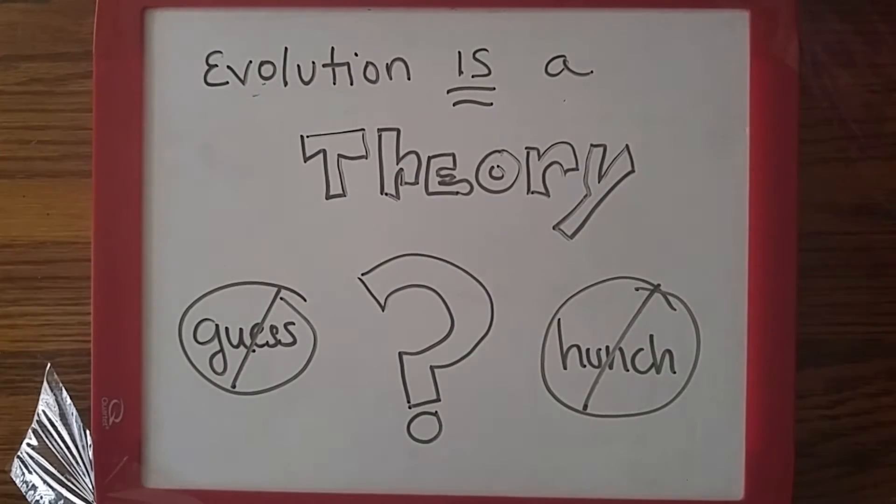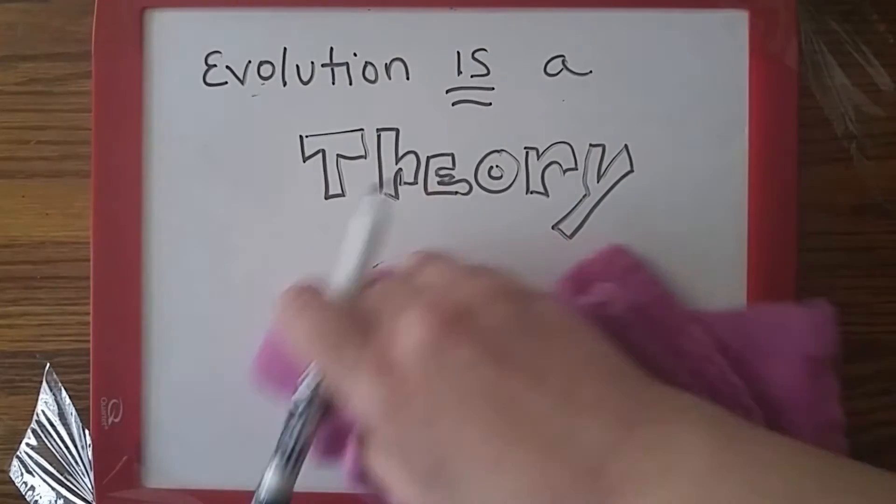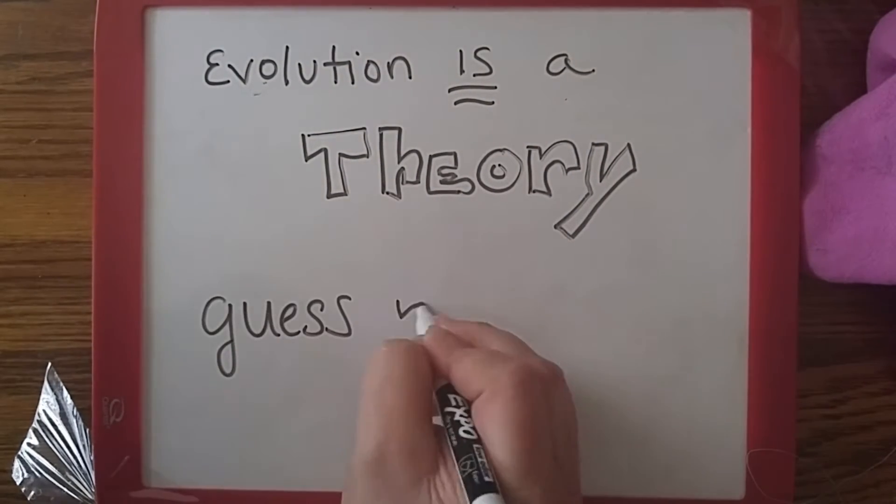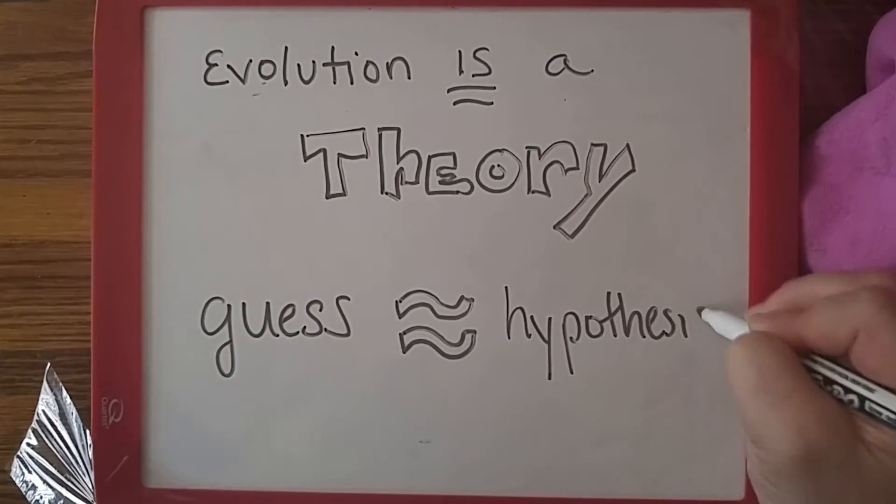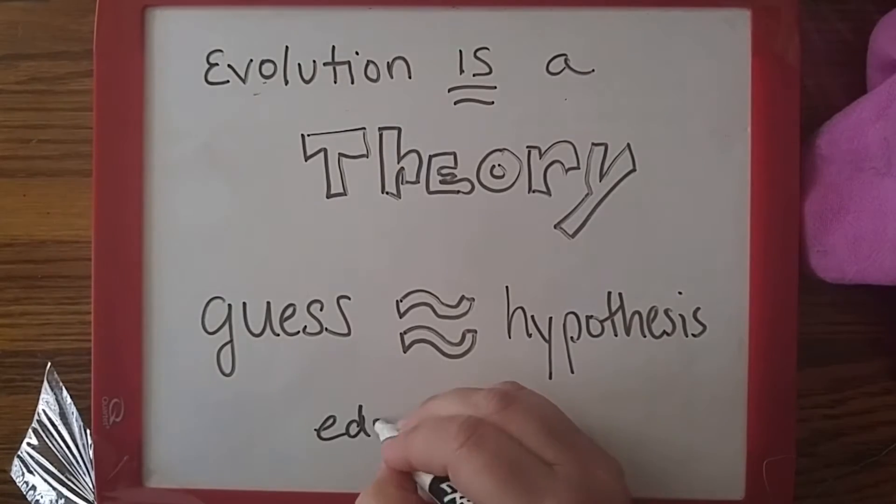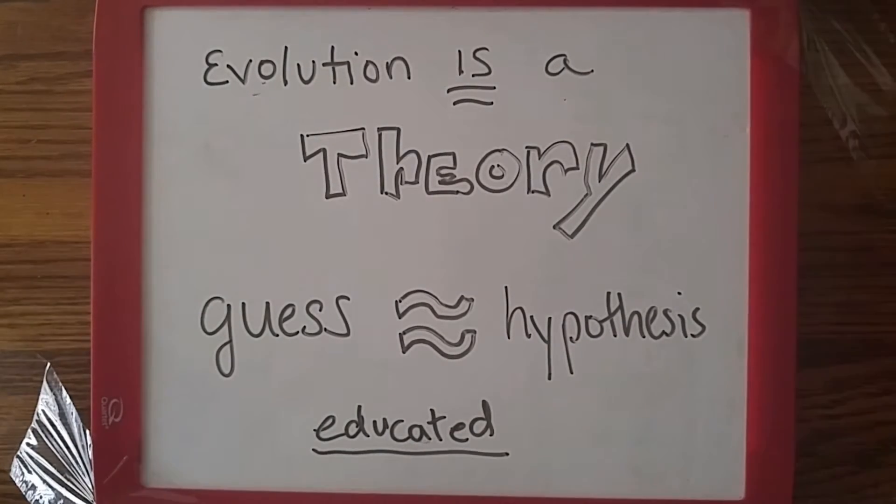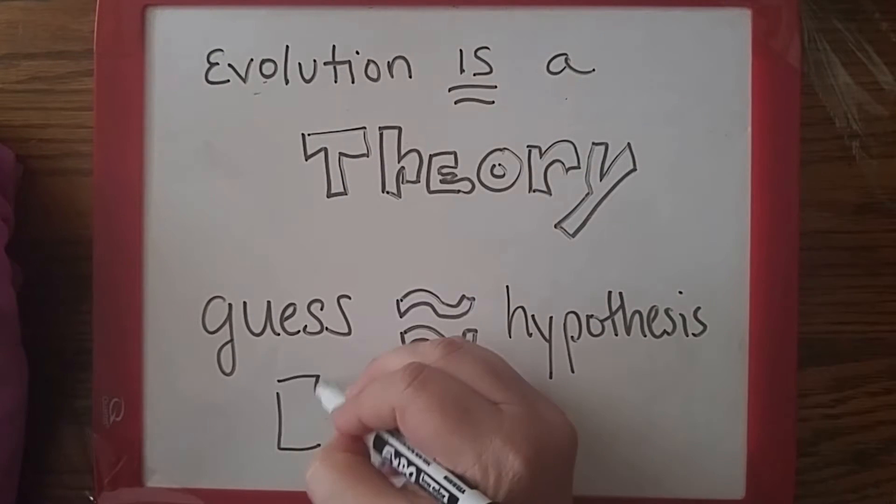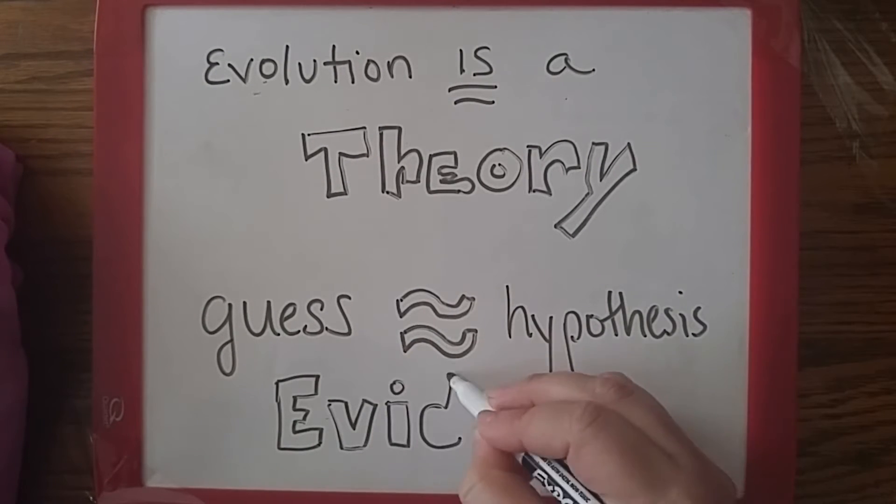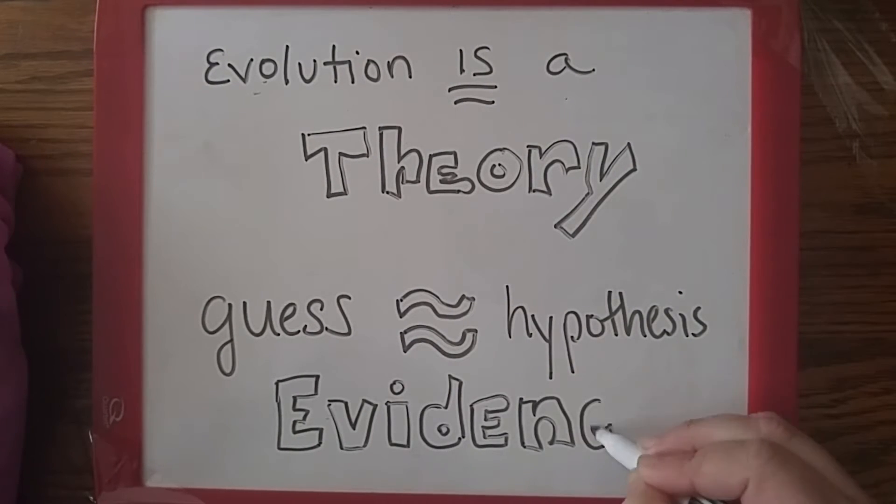By contrast, a scientific theory refers to a well-substantiated explanation for some natural phenomenon. A scientific theory consists of multiple hypotheses that have been extensively tested and are supported by the best available data. Thus, a scientific theory is more than just a theory. It is an empirical truth.